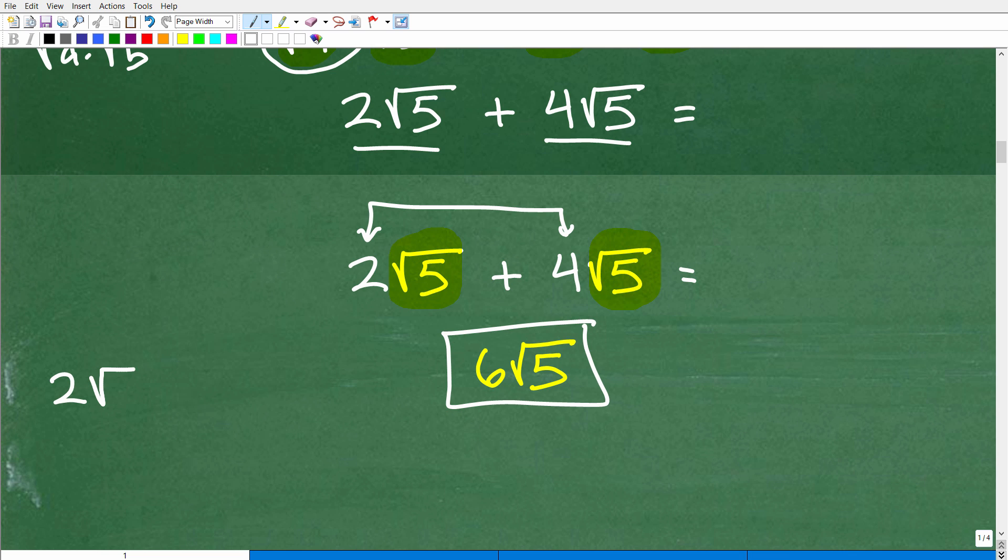So, for example, if I had 2 times the square root of 5 and I had 4 times the square root of 3, I could not add these two square roots because this is the square root of 5, this is the square root of 3. They have to be exactly the same.